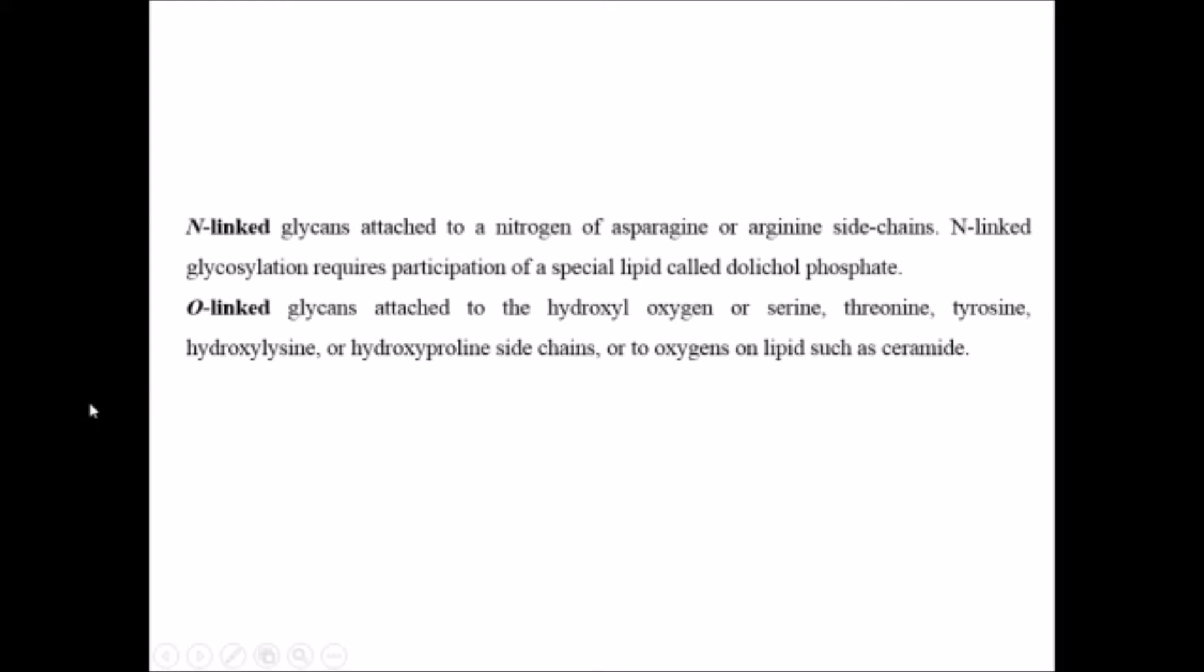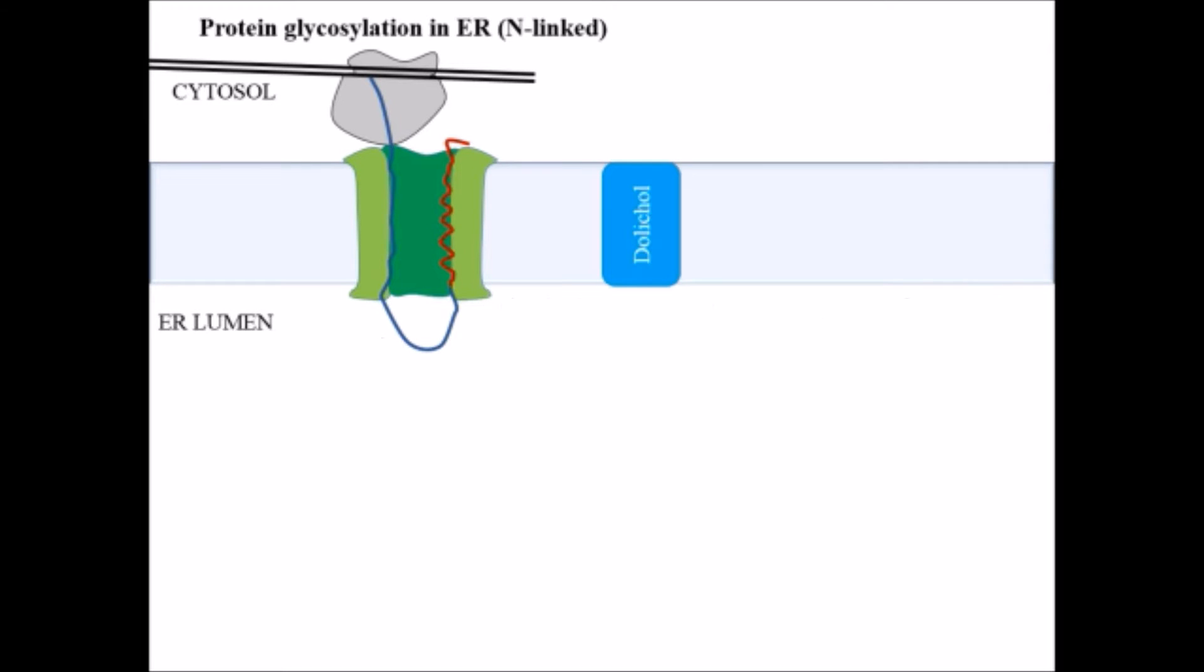threonine, tyrosine, hydroxylysine, or hydroxyproline side chains, or to the oxygen of lipids such as ceramide. One more thing which is required in N-linked glycosylation is dolichol phosphate.